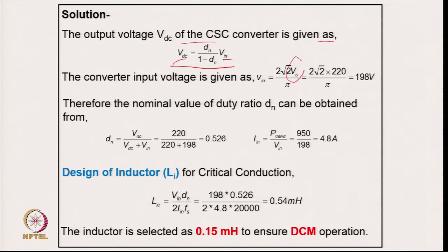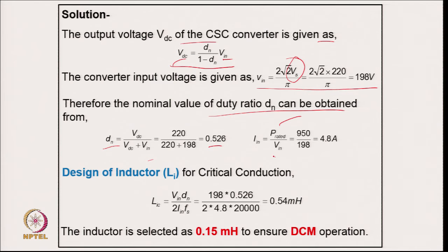The average input voltage from the diode rectifier is 198 V for 220 V RMS. The nominal duty ratio is found from the output voltage relation, giving D = 0.526, above 0.5, confirming boost mode operation. The input average current is power divided by average input voltage: 950 / 198 = 4.8 A. The critical inductance for DCM is calculated allowing ripple of twice the average current, giving 0.54 mH.